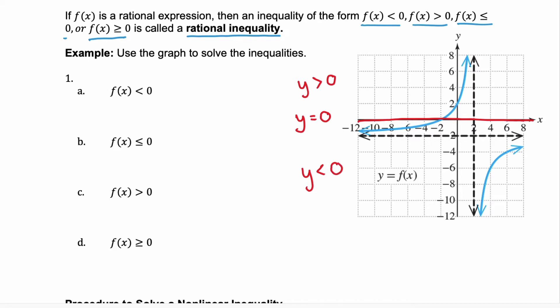Keep this in mind. Our first inequality, we're looking for f(x) less than 0, so we want to know when is our graph below the x-axis. That would be this chunk of the graph, and notice that is from x values of negative infinity through negative 2. We do not include negative 2 because at x equals negative 2, y is equal to 0.